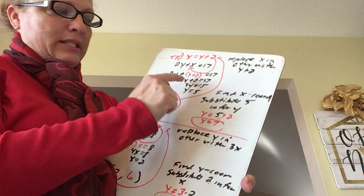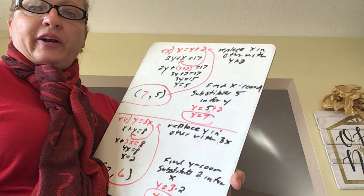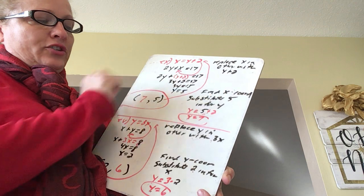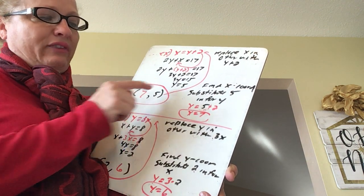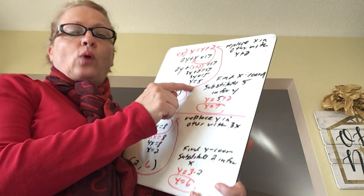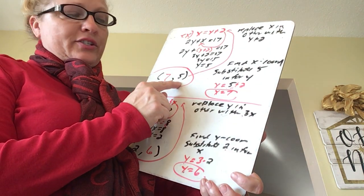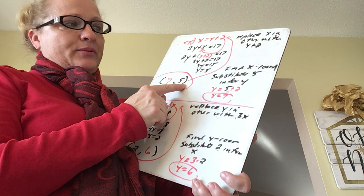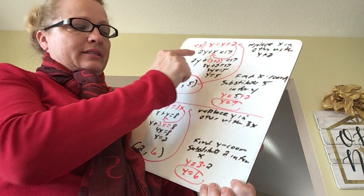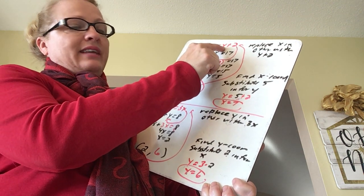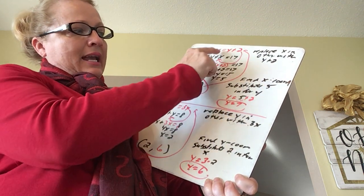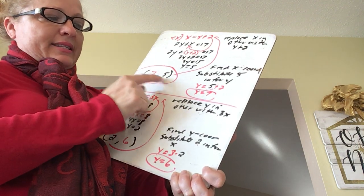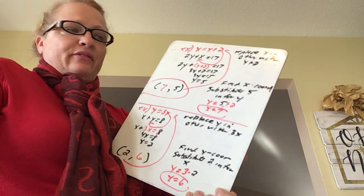Now we have the equation down to one variable, y. Combining like terms gives 3y plus 2 equals 17. Subtracting 2 gives 15, and dividing by 3 gives y equals 5. We are not finished — this is the y coordinate of the point of intersection, so now I've got to find the x coordinate. Substituting back into x equals y plus 2: x equals 5 plus 2, so x equals 7. These two lines would have intersected at (7, 5) if we had graphed them.